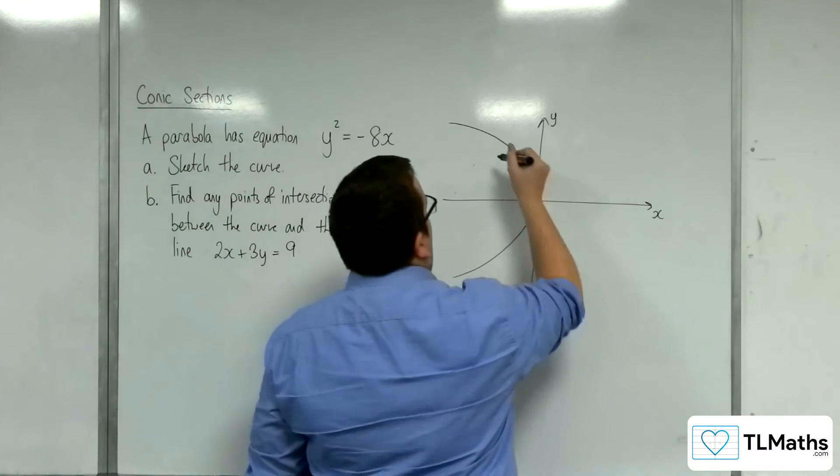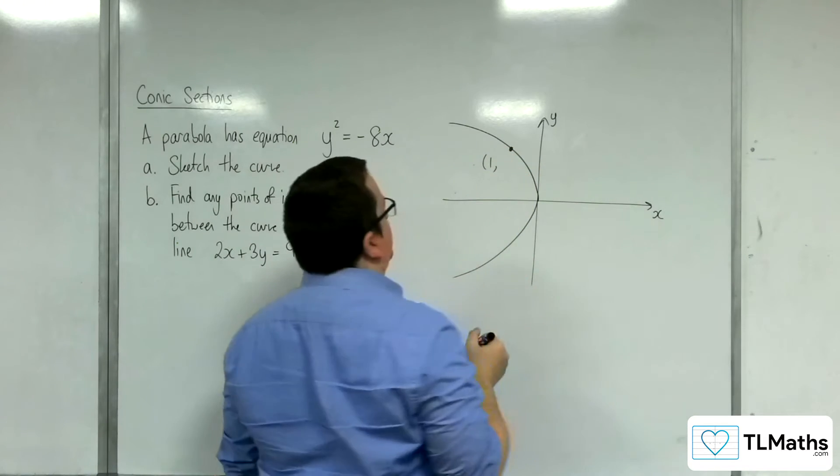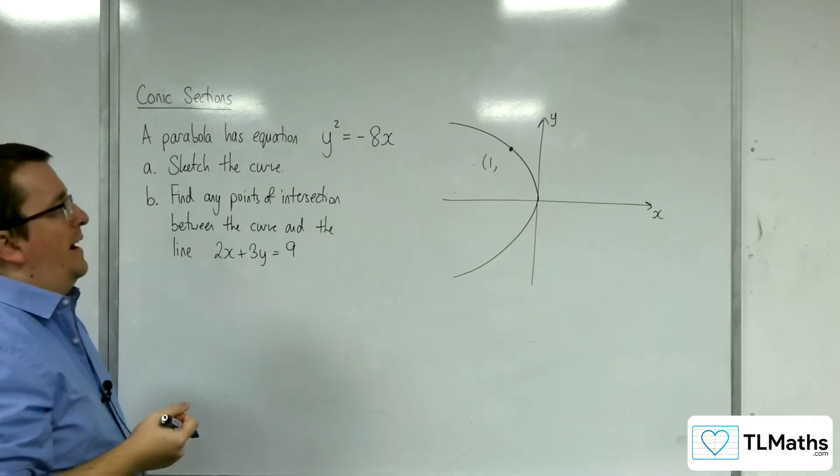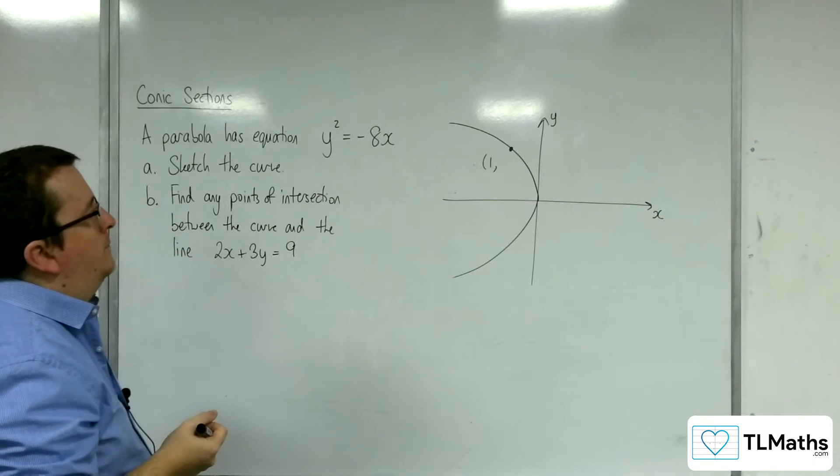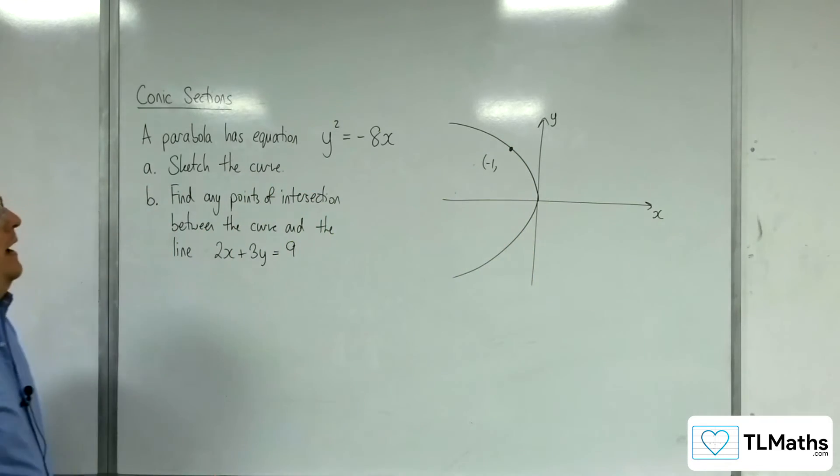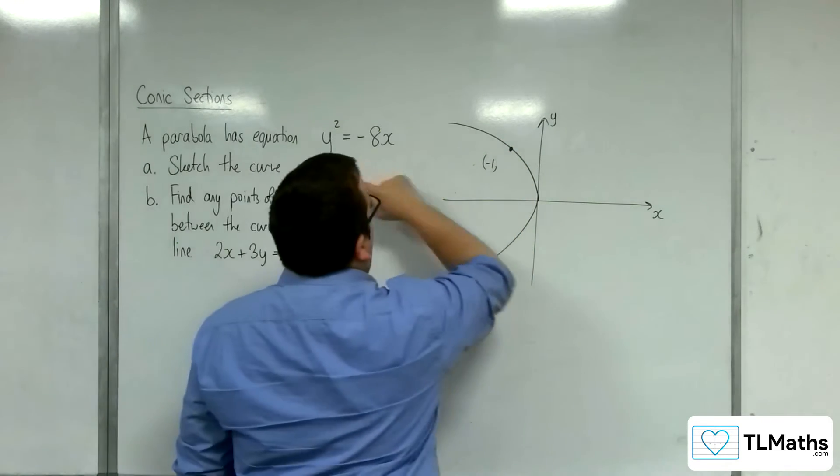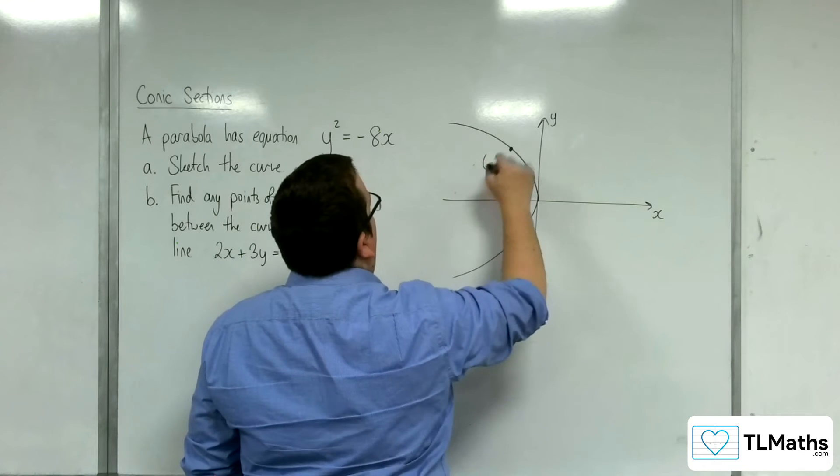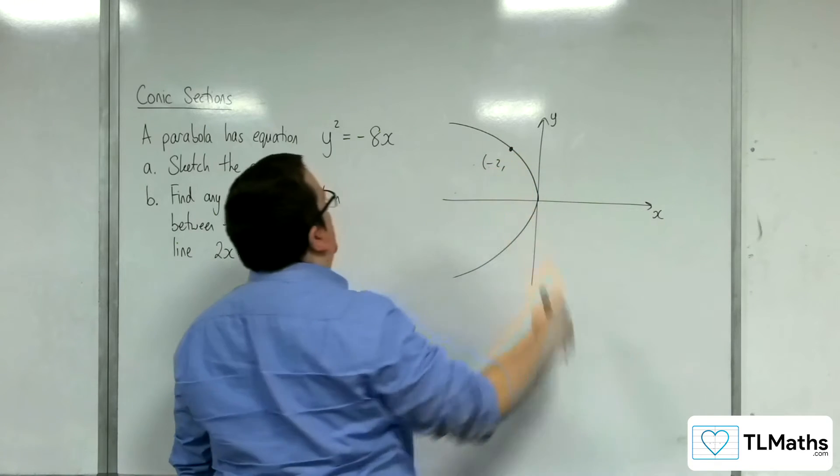So I'm going to choose the point 1. Now what would the y value be? Sorry, minus 1, not 1. Minus 1. Well actually, if I have it as minus 2, then I can make it a nice square number, can't I?